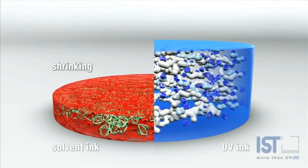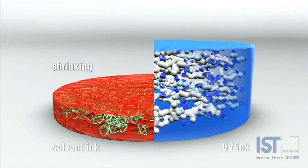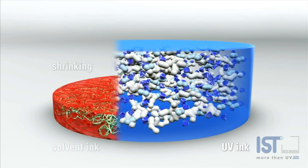UV-cured inks and varnishes, on the other hand, are solidified by means of a photochemical process, which is also known as cross-linking.